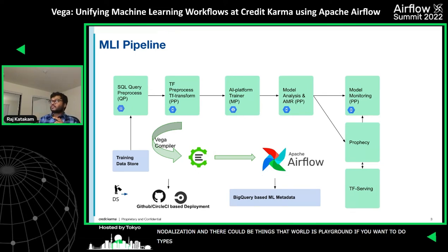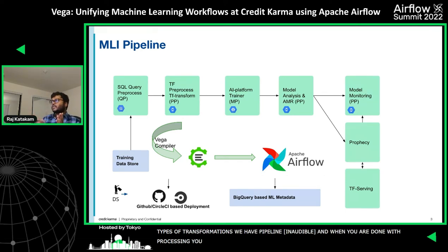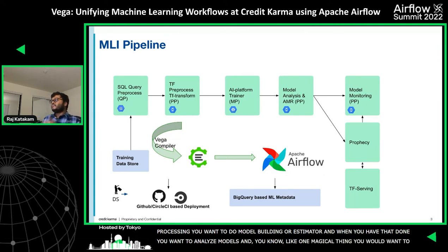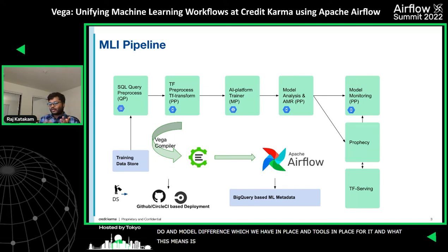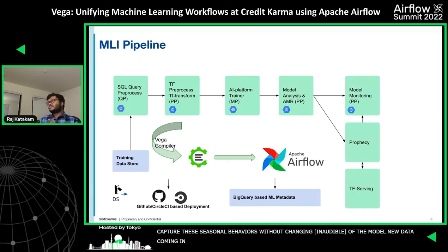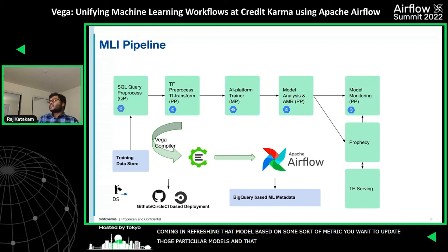Once you're done with pre-processing, you would want to do model building or estimator training. After that, you'd want to analyze models, and one very important thing you'd want in an ideal world is auto model refresh. What auto model refresh means is that over time models get stale, and you want to capture the latest seasonal behavior without actually changing the definition of the model. As new data comes in, you want to refresh that particular model based on some metric — you want to update those models. That is the auto model refresh capability.